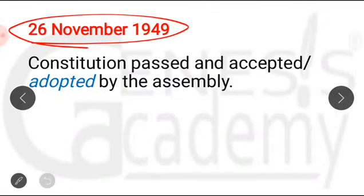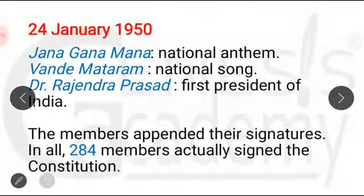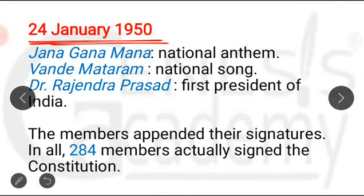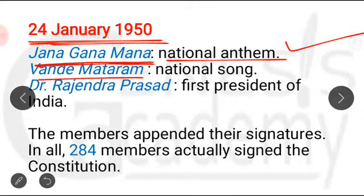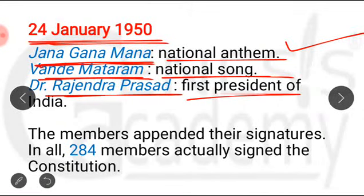26th November 1949 was the last date — the last meeting of the last session. There were 11 sessions in all, and it was the last meeting of the last session, meaning the Constituent Assembly's work was complete. However, it was decided that the Constituent Assembly would also meet on 24th January 1950. On that date, three things happened: Jana Gana Mana was adopted as the National Anthem of India; Vande Mataram was adopted as the National Song; and Dr. Rajendra Prasad was made the first President of India.